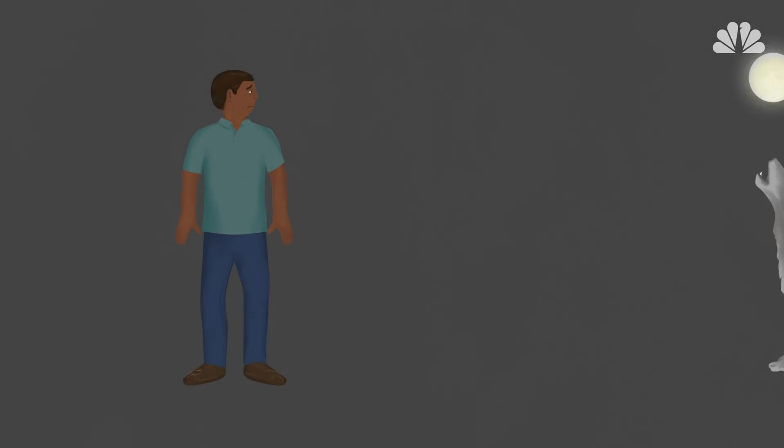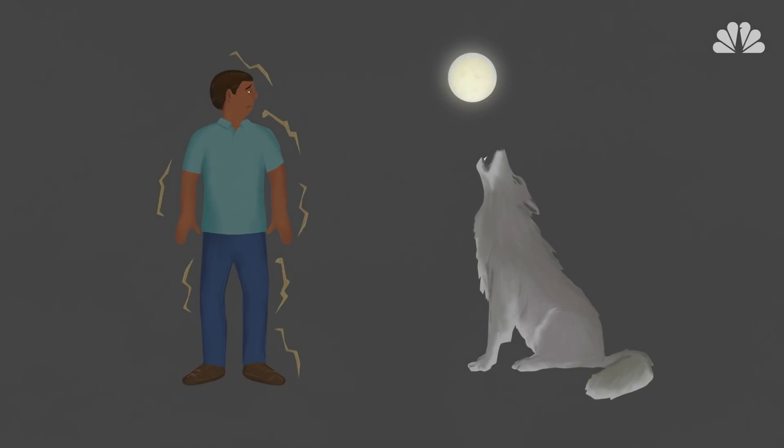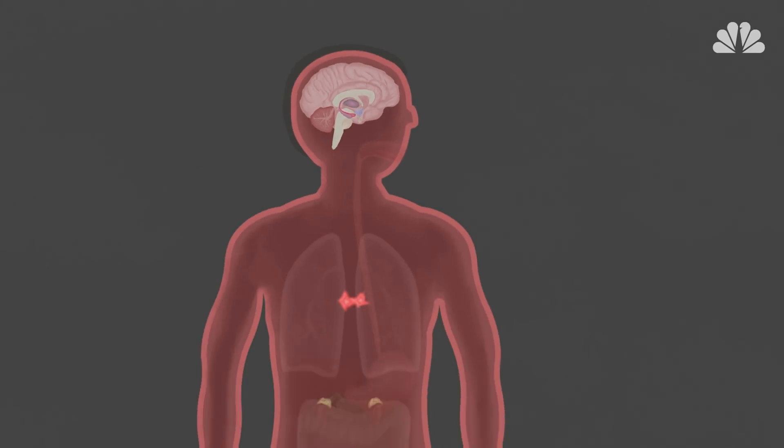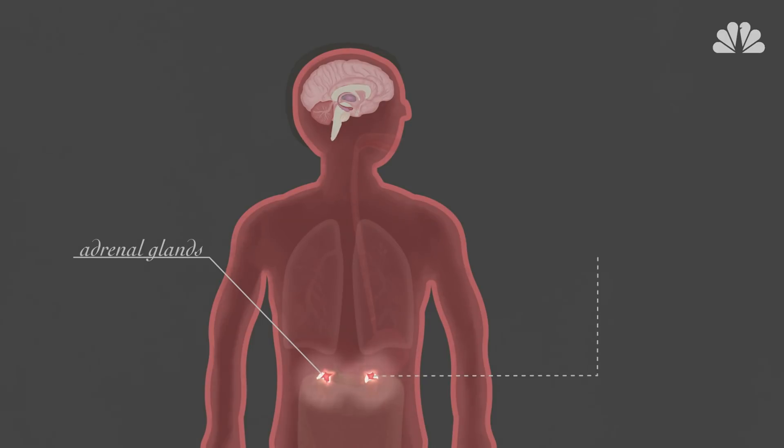If your brain decides the potential threat is indeed something to fear, often outside of your conscious awareness, your amygdala sends a distress signal to your hypothalamus, which in turn alerts your sympathetic nervous system by sending messages to the adrenal glands.